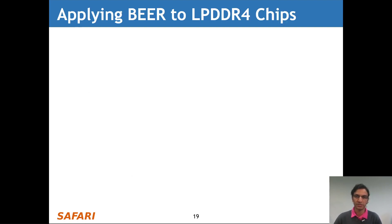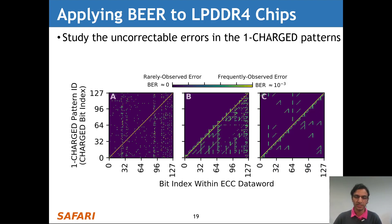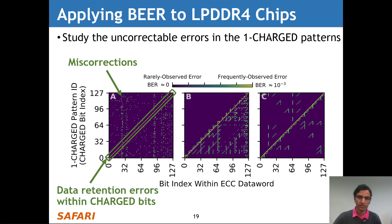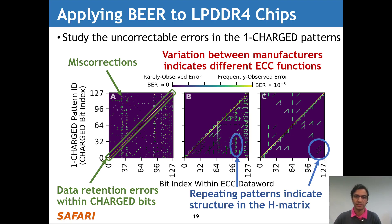Let's take a look at what happens when we apply BEER to real DRAM chips. We study the uncorrectable errors in the one-charge test patterns, showing results for a representative chip from each of the three manufacturers A, B, and C. The x-axis shows the bit index within a 128-bit ECC data word, and the y-axis shows each of the 128 one-charge test patterns indexed by the position of the charged bit. Data retention errors appear along the y-equals-x line; any errors off this line are miscorrections that are purely an artifact of ECC correction. We observe high variation between the three error profiles, indicating different ECC functions, and repeating patterns in manufacturers B and C suggesting underlying structure in their H matrices absent in manufacturer A.